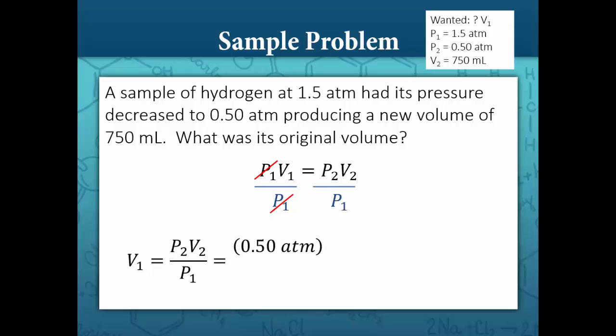P2 is 0.50 atm, V2 is 750 milliliters, and we divide that by 1.5 atm. The unit atm cancels out, and our answer is 250 milliliters.